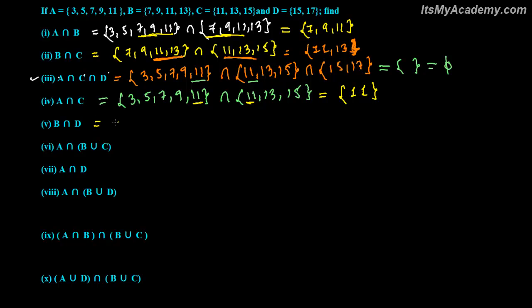Now intersection between B and D. B is 7, 9, 11, 13. D is 15 and 17. Again we got nothing, because in B we have 7, 9, 11, 13, and in D we have 15 and 17 — nothing is common. So B intersection D is Phi.